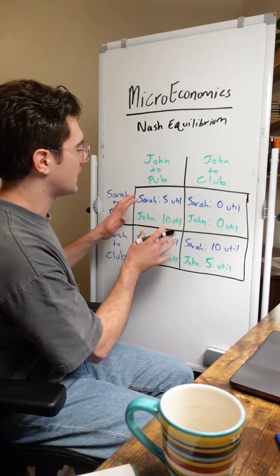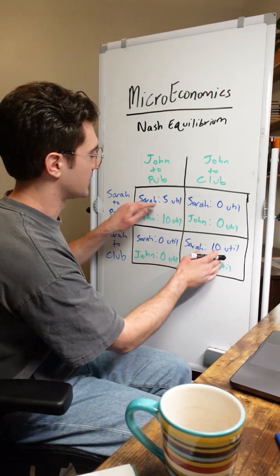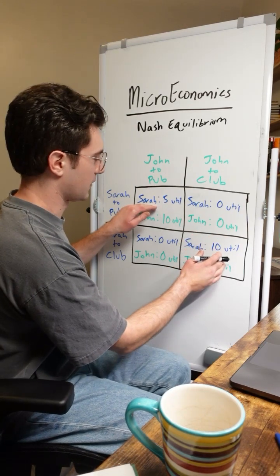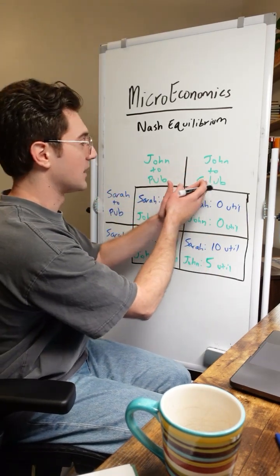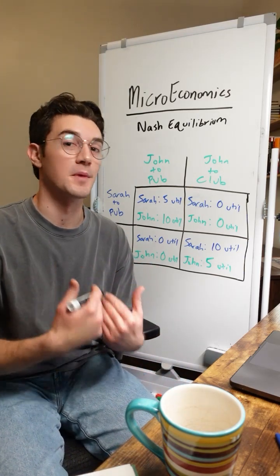But with that being said, this game right here actually has two Nash equilibriums in the top left and bottom right cells. I use this example of John and Sarah going to a pub versus club because honestly, this happens with my friend group too.